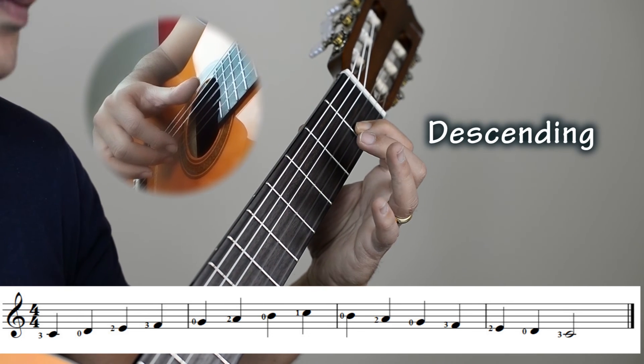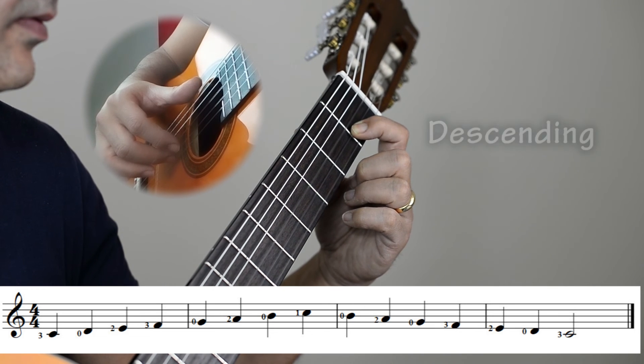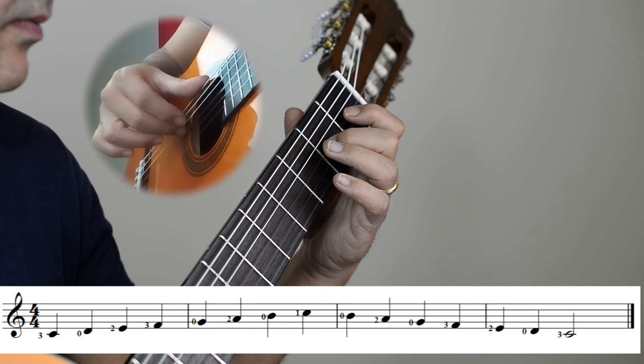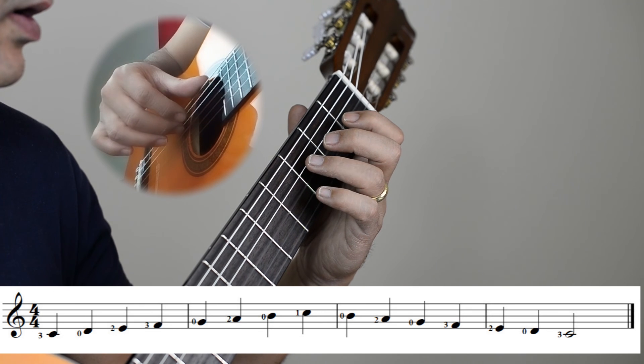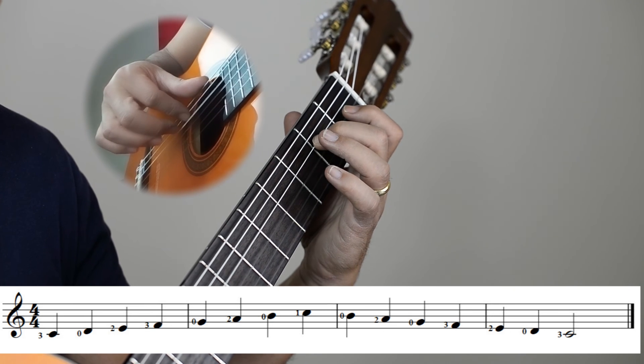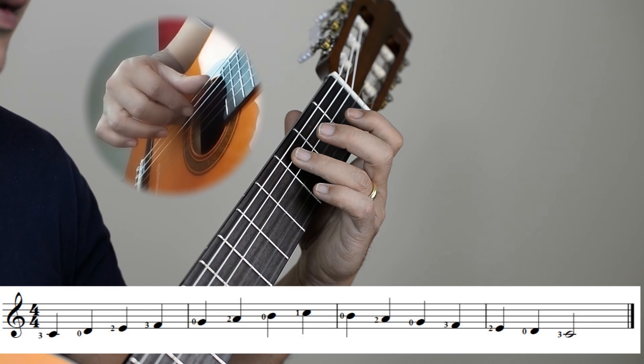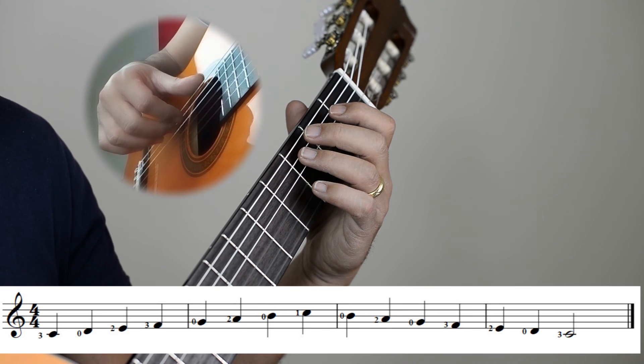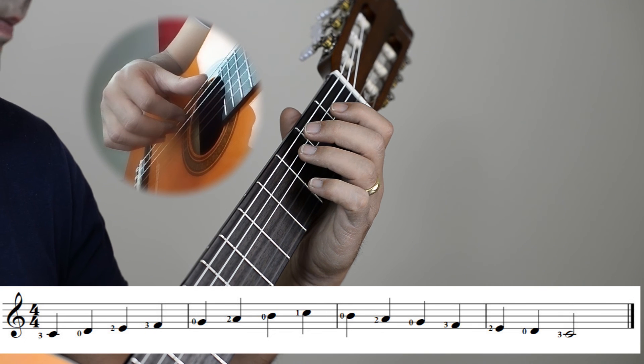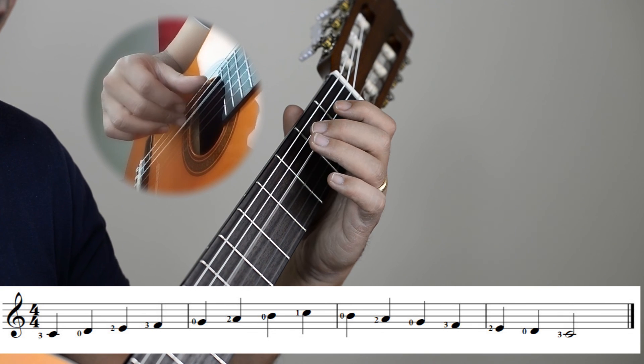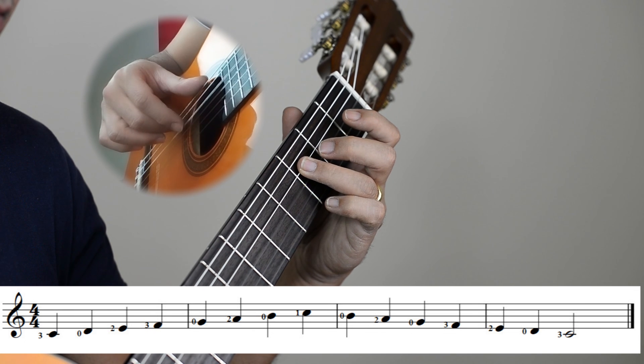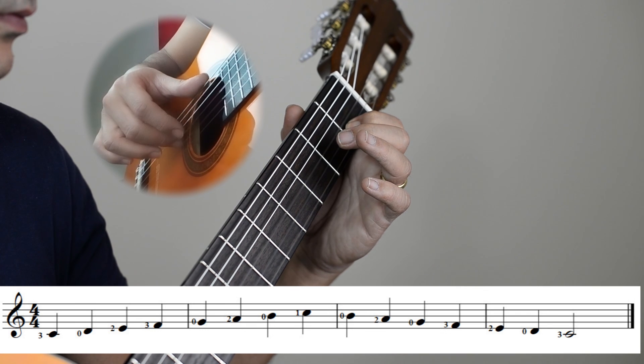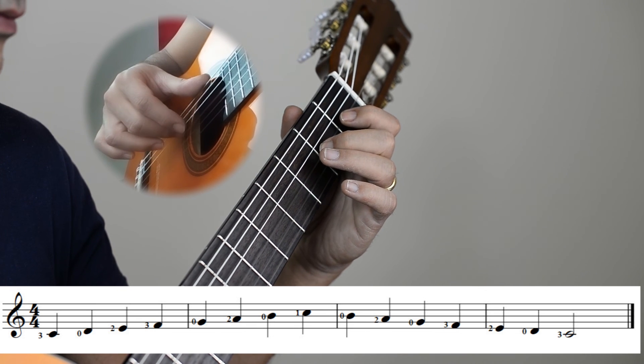But we're not going to repeat this C. So we'll start with the B, A, G, F, E, D, C. So let's play the scale one more time, ascending and descending. Ready? Three, four. Here we go.